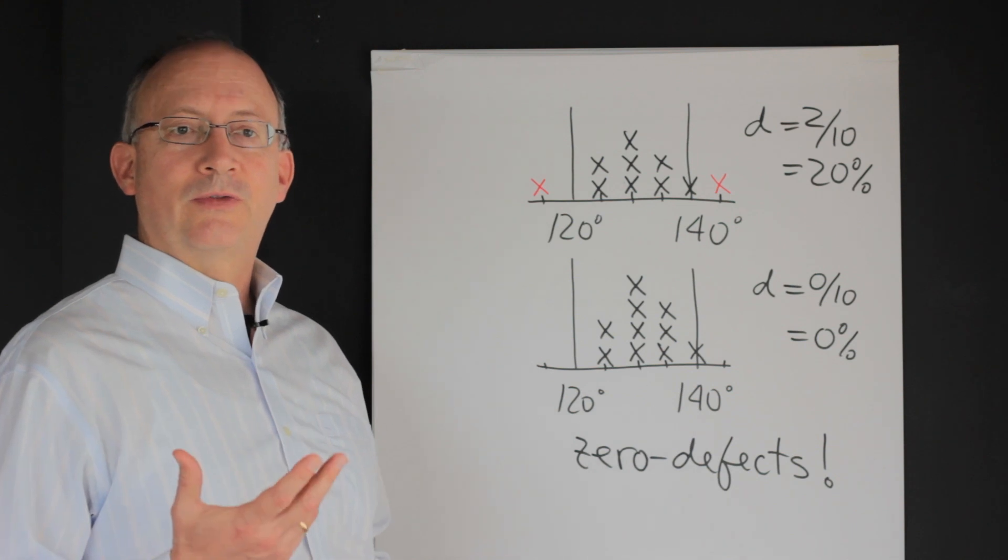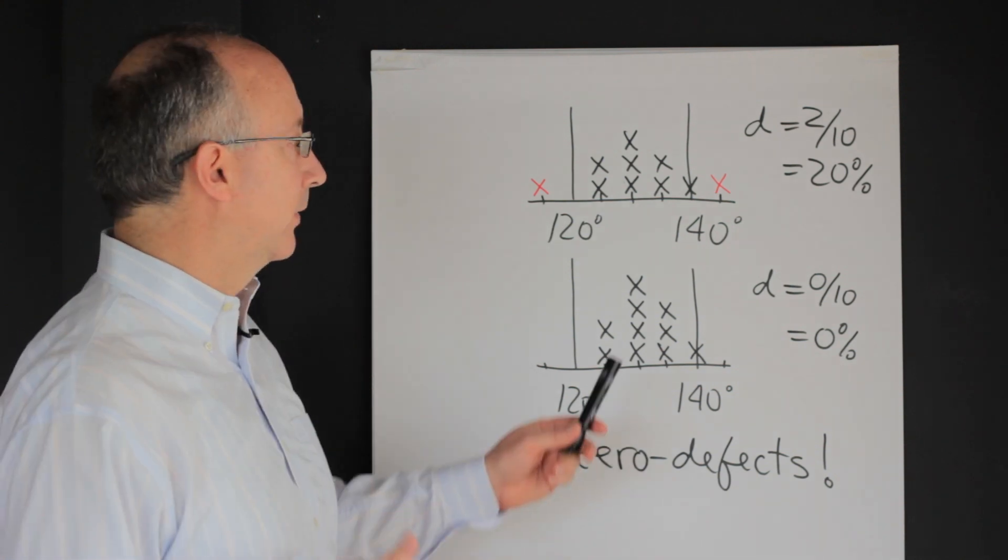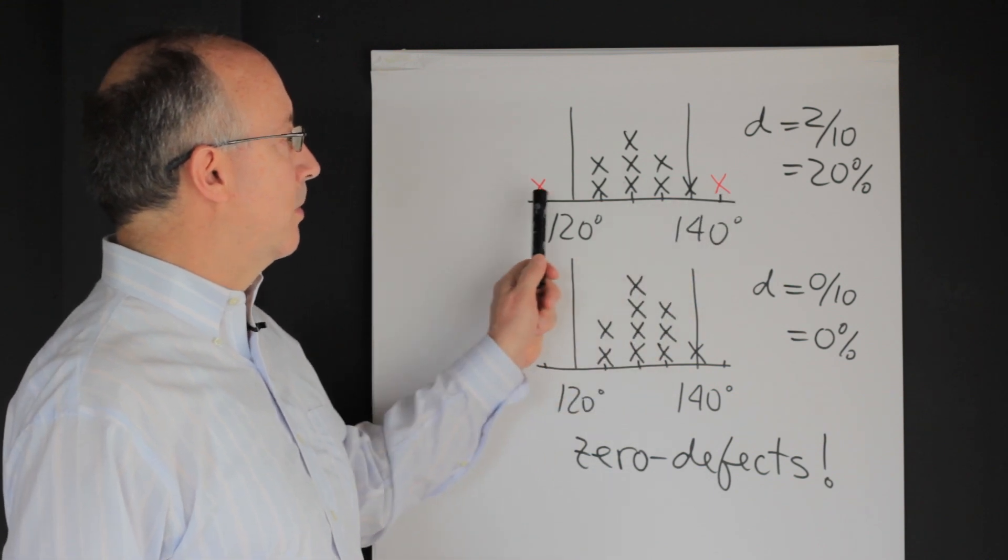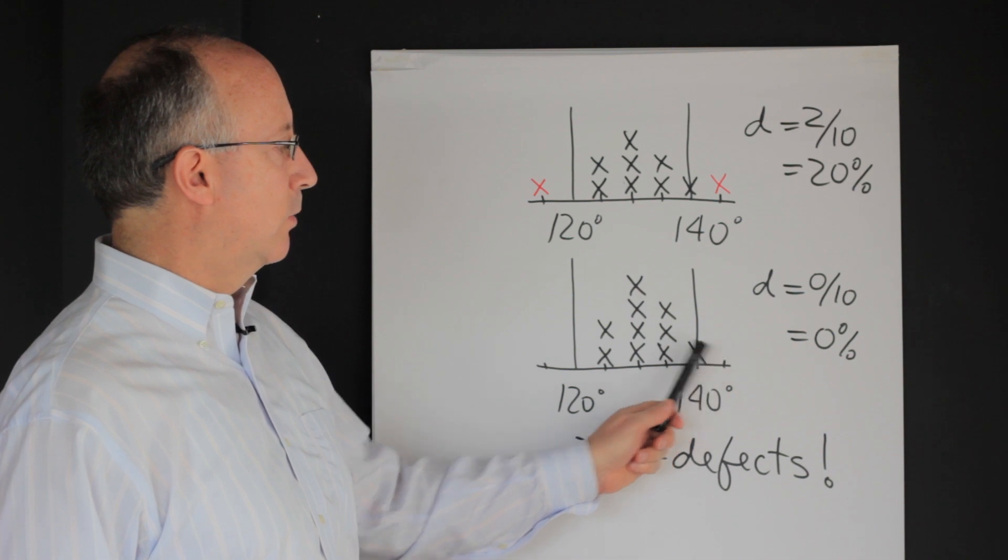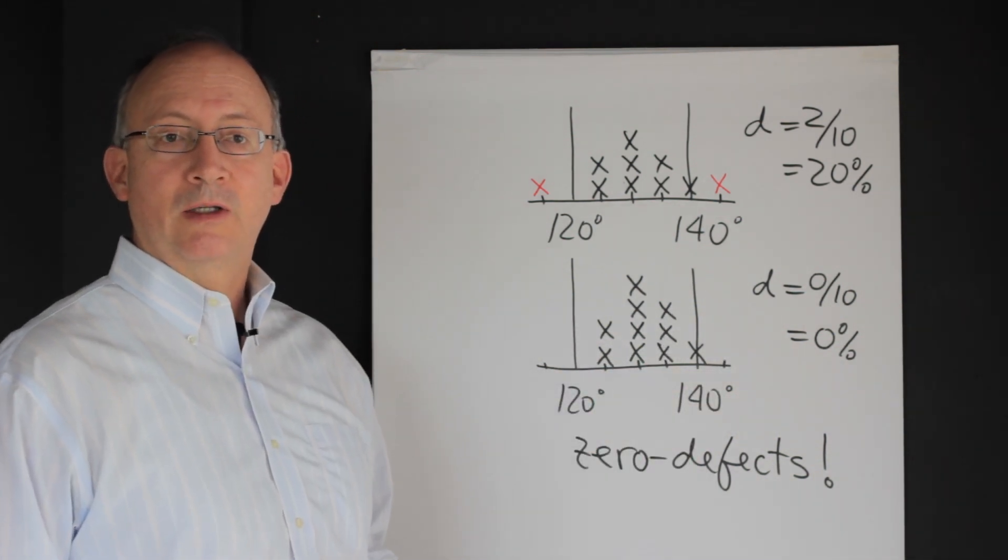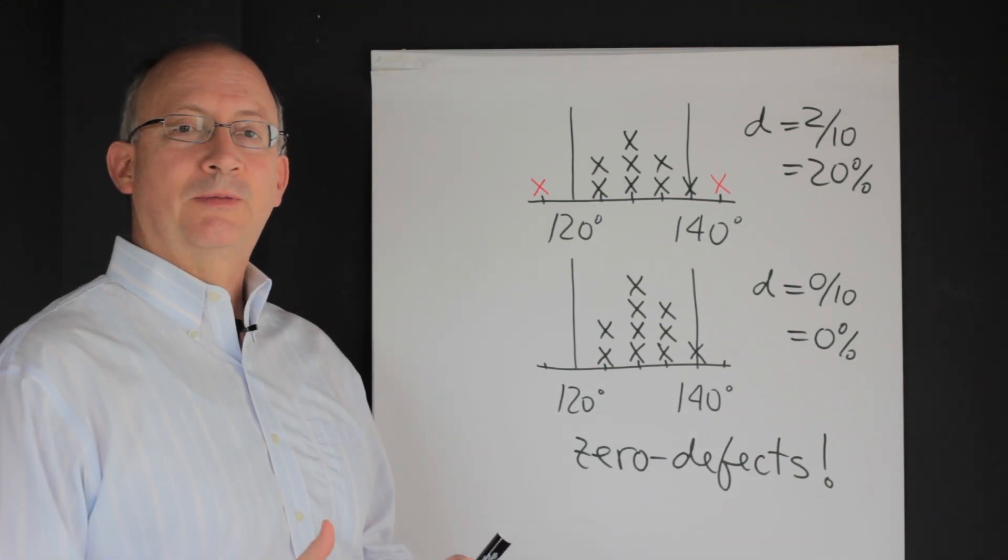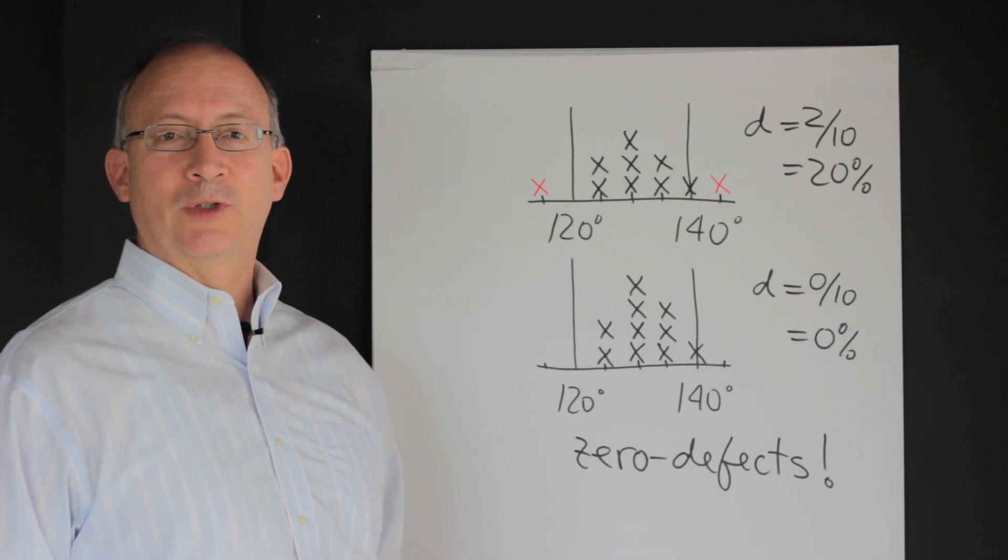Notice that the idea of zero defects focuses on the absence of something bad. Here we had two bad ones, one too cold, coffee too cold, coffee too hot. Now we don't have anything that is bad and therefore we may think that everything is okay. But instead of focusing on the absence of something bad, could we not focus on the abundance of something good?